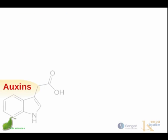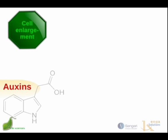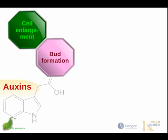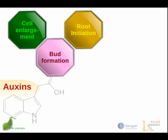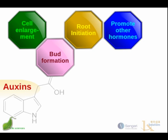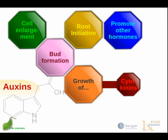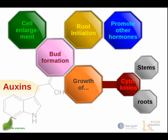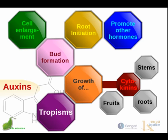To look at auxins, one of the things we can do is look at the roles they provide in the plant. They influence the enlargement of cells, the formation of buds, and the initiation of roots. They also play a role in promoting other hormones. Together with cytokinins, they control the growth of stems and roots and fruits and convert stems into flowers. Auxins also tend to be produced at the tip of roots and shoots.